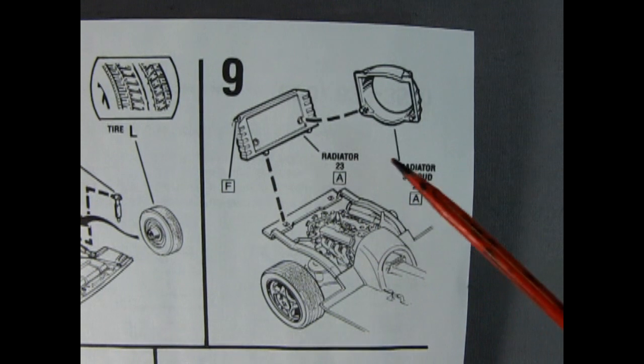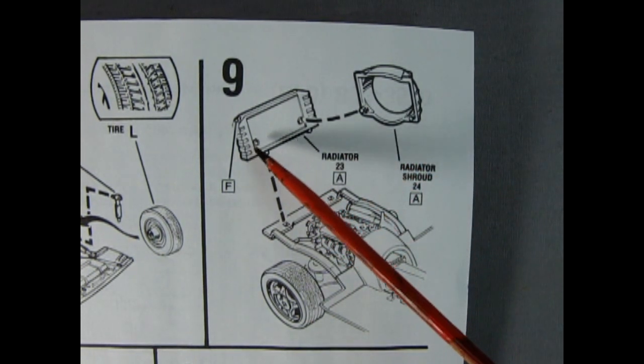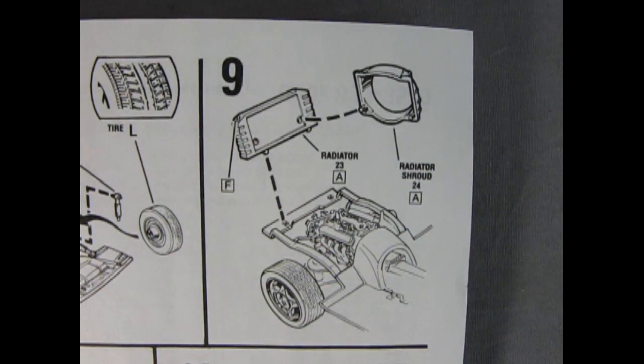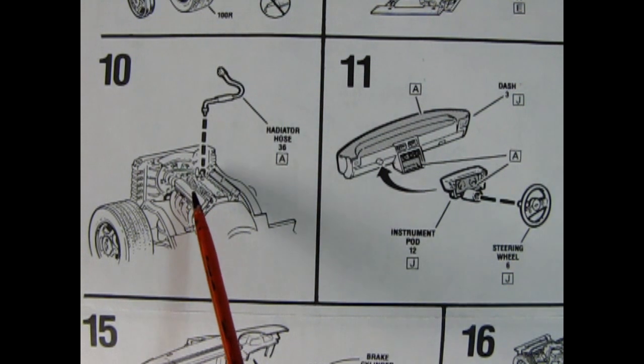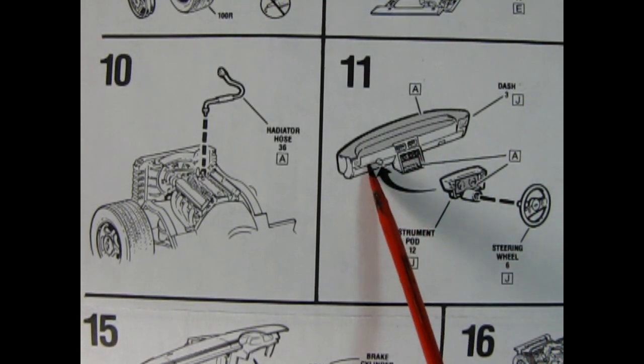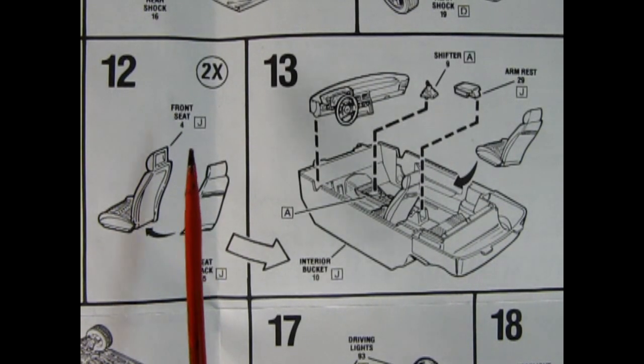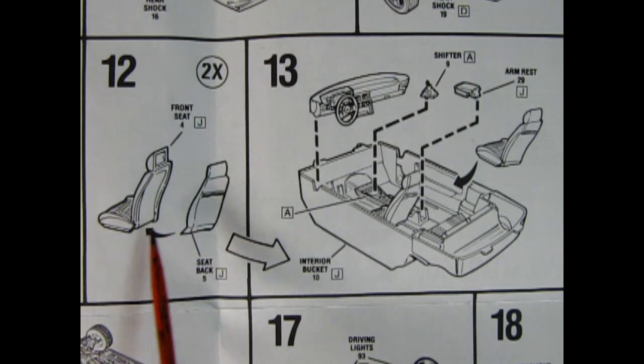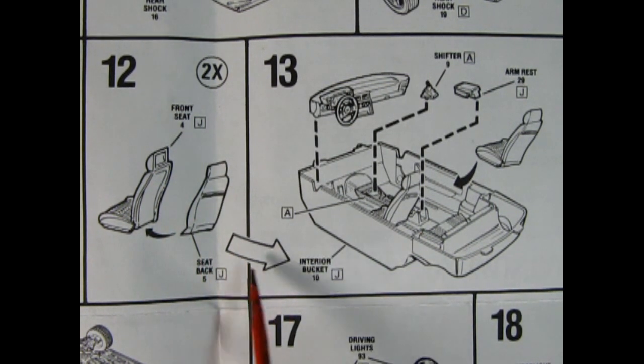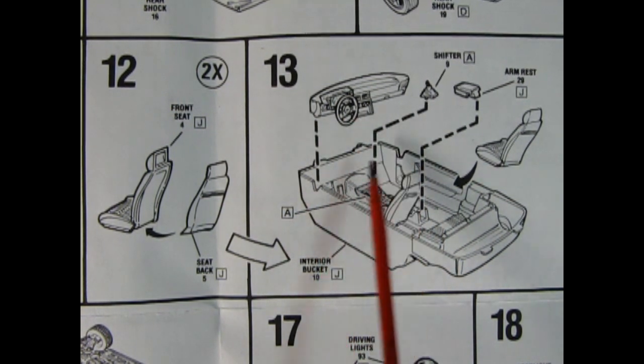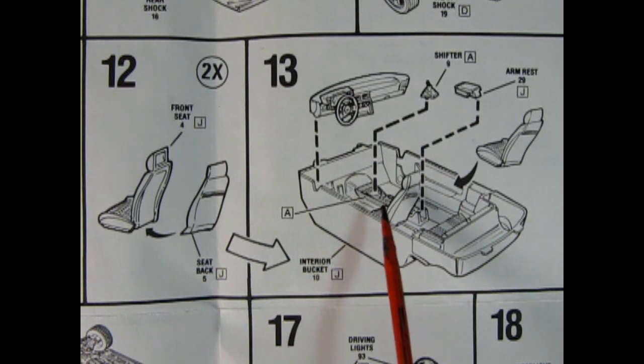Panel nine shows our radiator assembly going together. You've got the radiator itself and the radiator shroud. Glue them together, drop them on the front of your chassis. Panel 10 shows the upper radiator hose being dropped on top of the engine and going into our radiator shroud. And then in panel 11 we've got our dashboard. We've got our instrument cluster being glued on this side and our steering wheel pops onto that steering column. Panel 12 shows our bucket seats going together. You've got the front and the back glued together. Make two of those and then move it across into your interior bucket. And there you've got your dashboard being dropped into place in these grooves. The shift lever goes into the center console. There's an armrest which also pops in and then you put your seats in there.